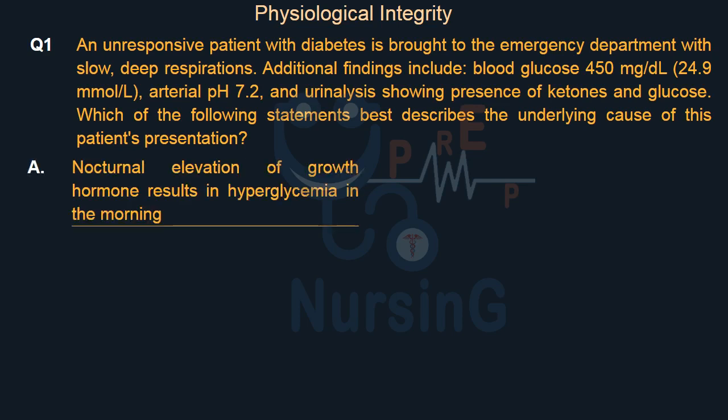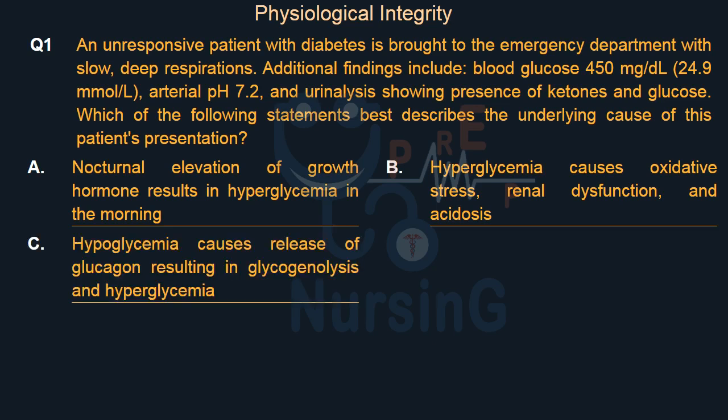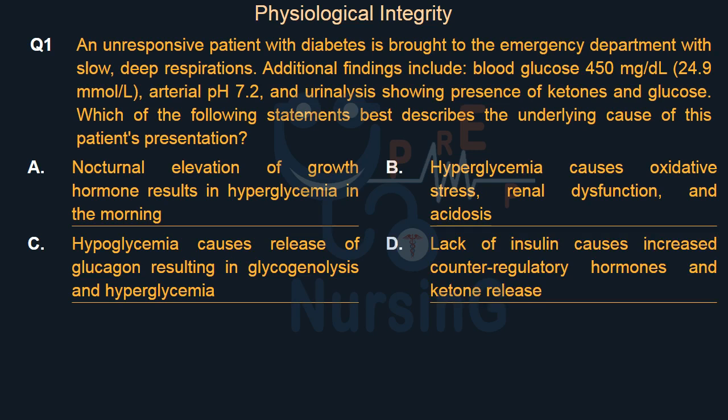Option A: Nocturnal elevation of growth hormone results in hyperglycemia in the morning. Option B: Hyperglycemia causes oxidative stress, renal dysfunction, and acidosis. Option C: Hypoglycemia causes release of glucagon resulting in glycogenolysis and hyperglycemia. Option D: Lack of insulin causes increased counter-regulatory hormones and ketone release.